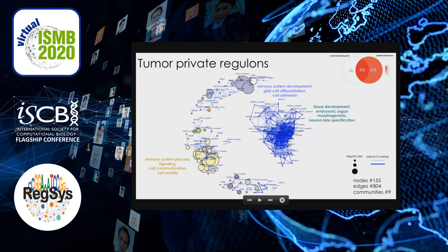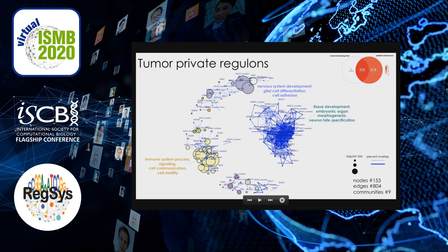We attempted to construct a tumor-private network. We first removed all overlapping regulons to retain only regulons exclusively active in the tumor cohort, then reconstructed the network based on activity scores, target overlap, and regulon size. The network shows the top one percentile of regulons by correlation coefficient. Node size reflects regulon size, and edge thickness reflects the percentage of target overlap between connected nodes. We then ran a community detection algorithm on the tumor-private network and identified nine communities, stratifying regulons into groups that work together to perform distinct functional activities.